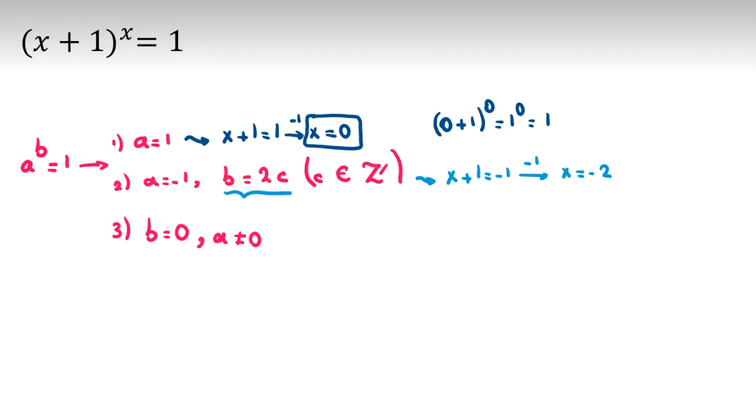And we will see that power is even. Power, why? Because x is even. And if we replace, it will be minus 2 plus 1 to the power of negative 2. It will be negative 1 to the power of negative 2, which is 1. So it is our second answer.